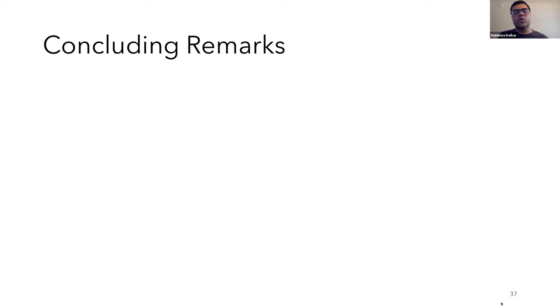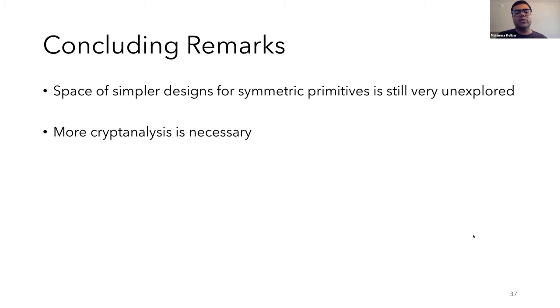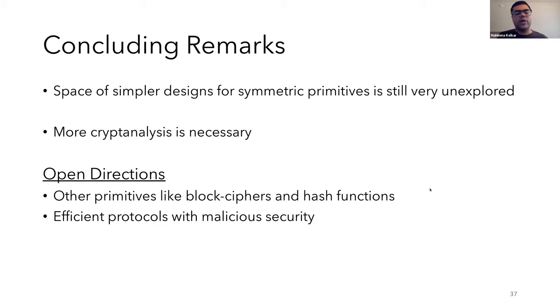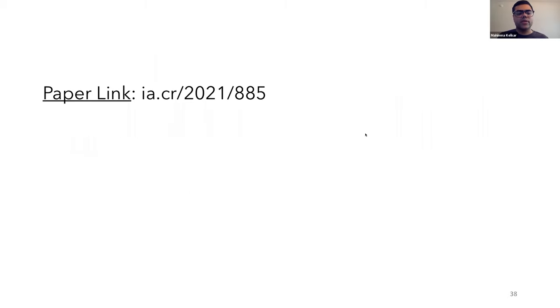Finally, I'll conclude with some remarks. The space of constructing symmetric primitives with simple designs is still very much unexplored. And more cryptanalysis is definitely needed. And as for some open directions, it would be interesting to have constructions for other primitives like block ciphers and hash functions. It would also be nice to have efficient protocols that have malicious security, which is a natural follow-up question. Thank you.